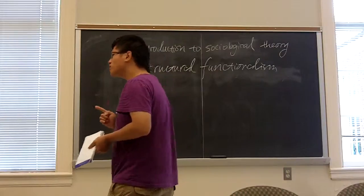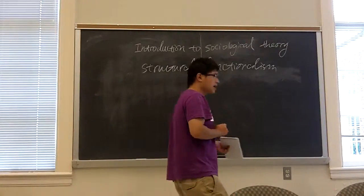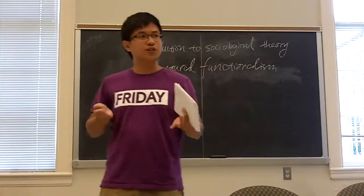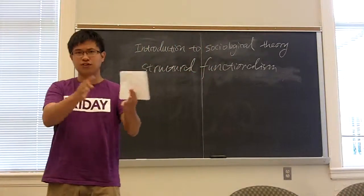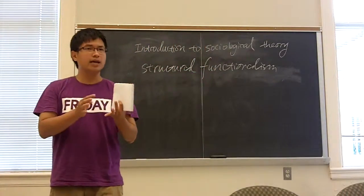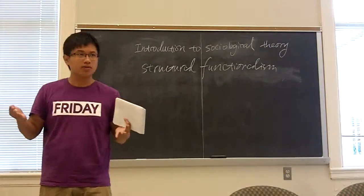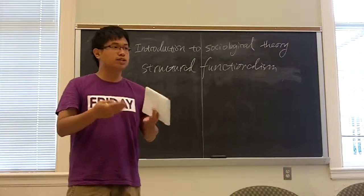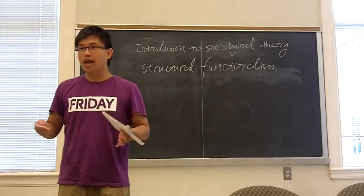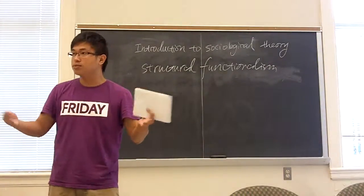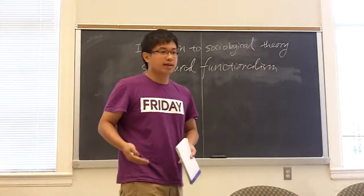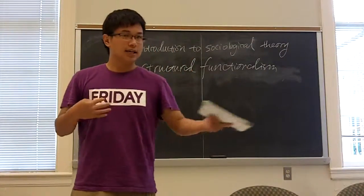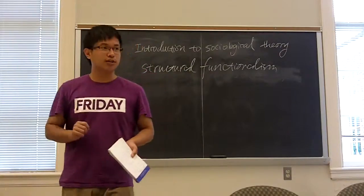But there is a question in this theory: how do we explain social change? If the society is composed of different integral parts that we cannot live without, then how can we explain revolutions and political reforms? How do we explain how we become what we are today? This is a very tricky question.